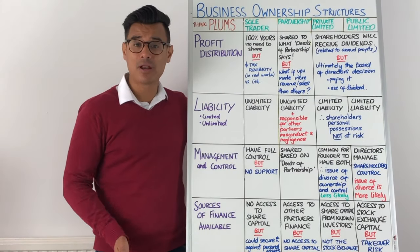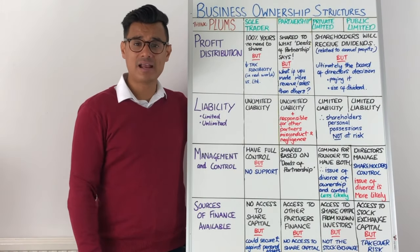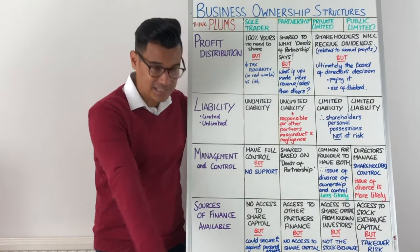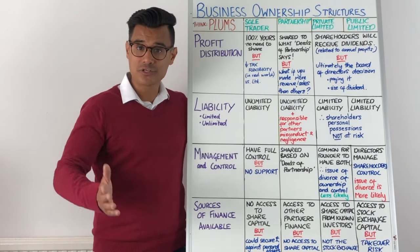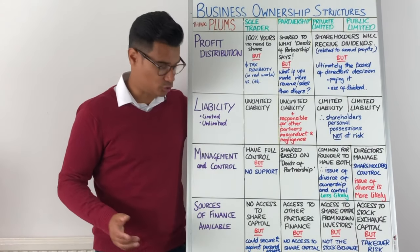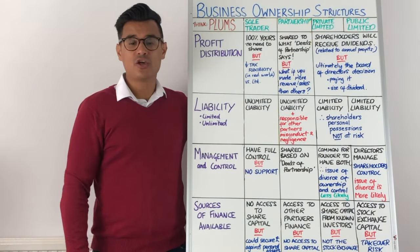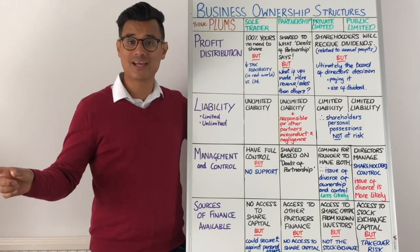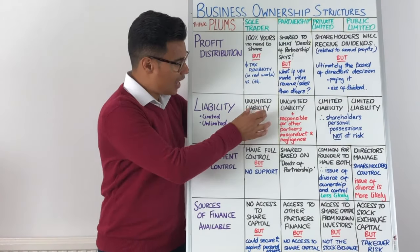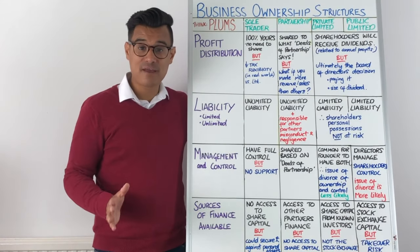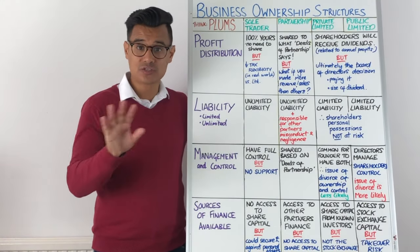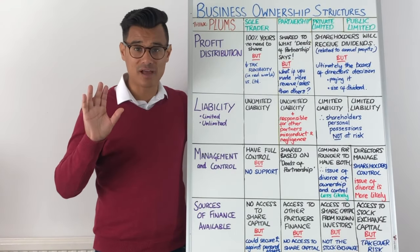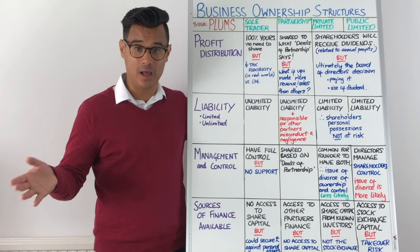Moving on to S — the S in PLUMBS is Sources of Finance Available. For a sole trader, they're not going to have access to share capital, they can't go down the equity finance route. But theoretically you could secure some larger debt against your personal possessions, because you have unlimited liability and there is no split in the legal entity between you the individual and the business — although that's really risky because it's your personal assets, possibly your house.